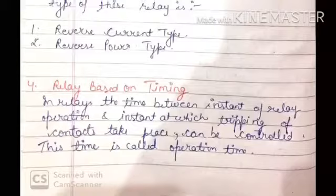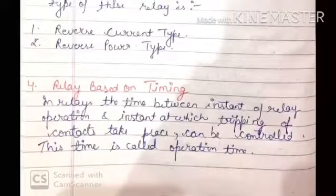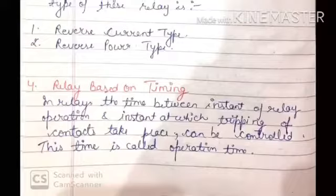Next we have relays based on timing. In these relays, the time between the instant of relay operation and the instant at which tripping of contacts takes place can be controlled. When a fault occurs in the system, the trip coil operates first, and after that the circuit breaker contacts open. The time between these two operations is called the operation time, and timing-based relays can control this operation time.